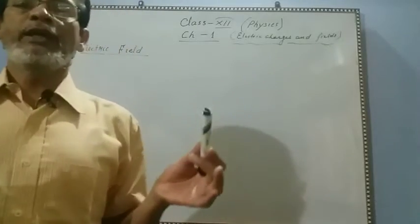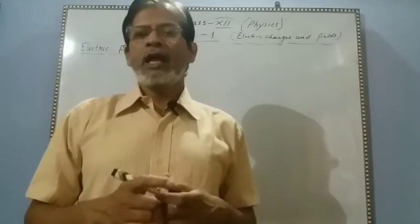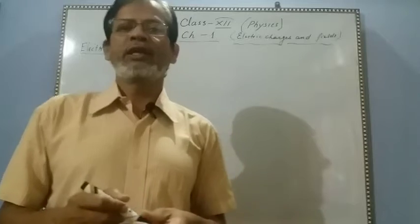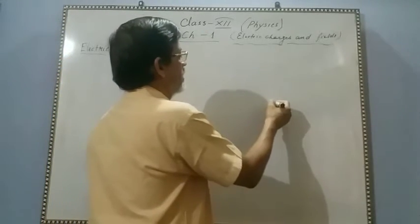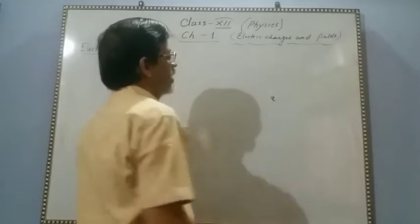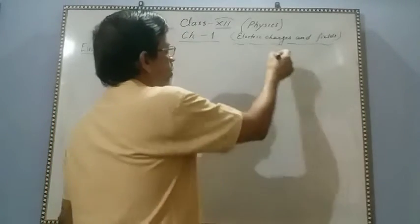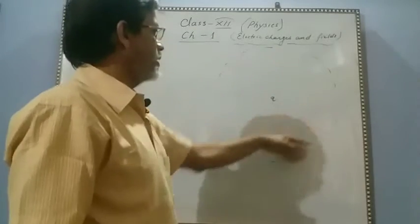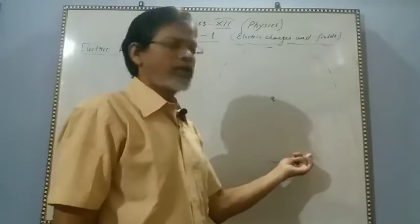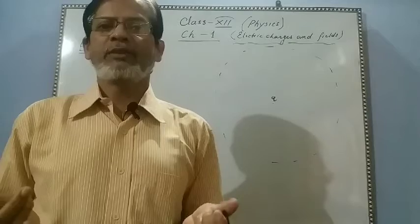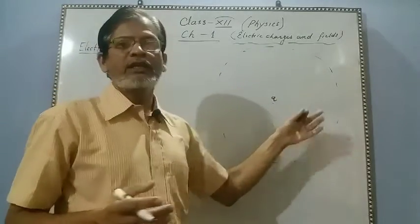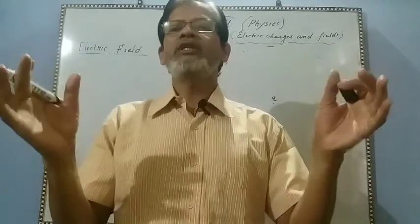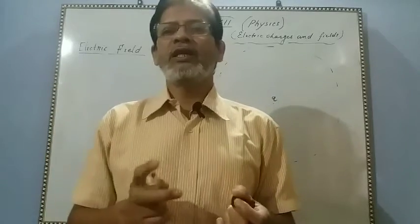Electric field means the region around a charged particle. This region is in the middle, up to which there is a charge particle interaction. This space is the electric field — the space surrounding a charged particle up to which it has influence.